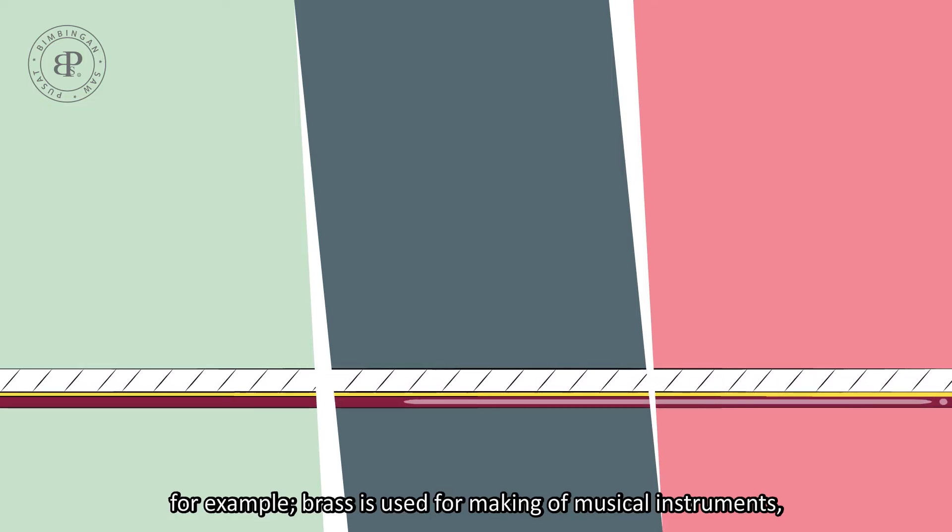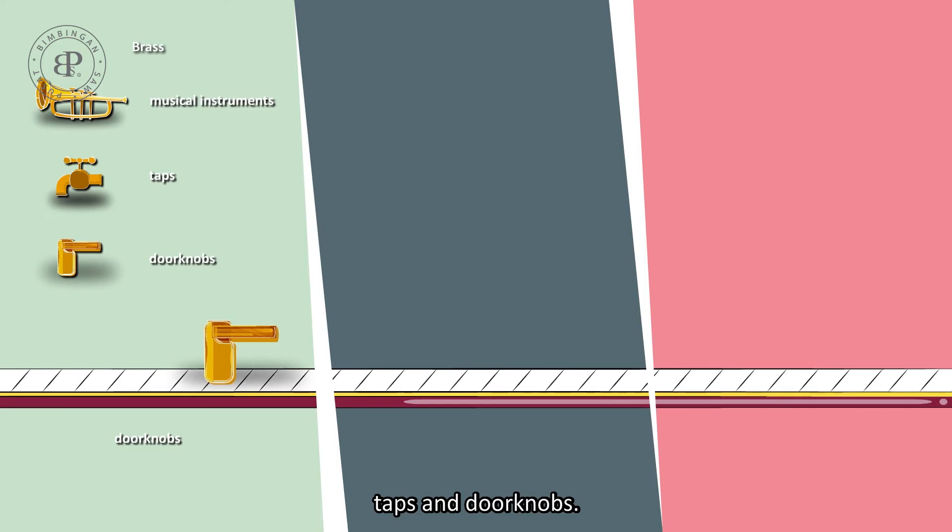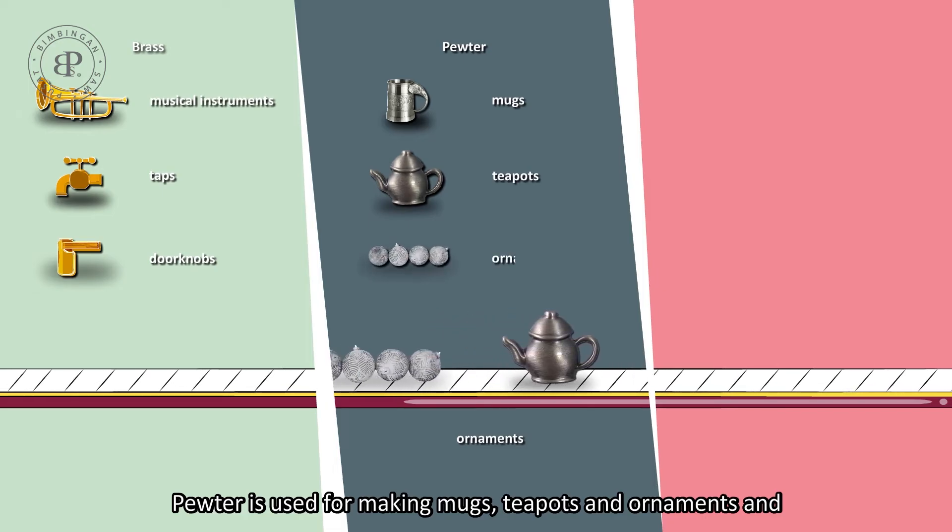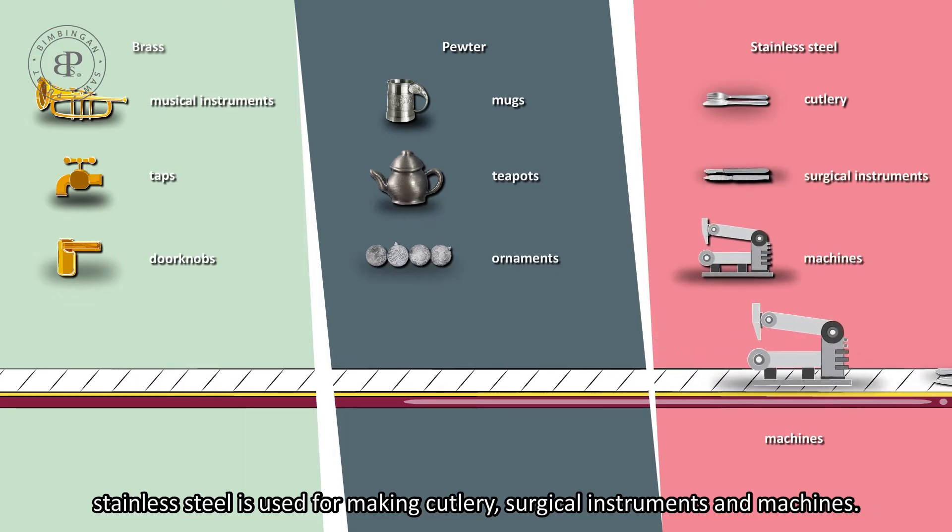For example, brass is used for making musical instruments, taps and doorknobs. Pewter is used for making mugs, teapots and ornaments. And stainless steel is used for making cutlery, surgical instruments and machines.